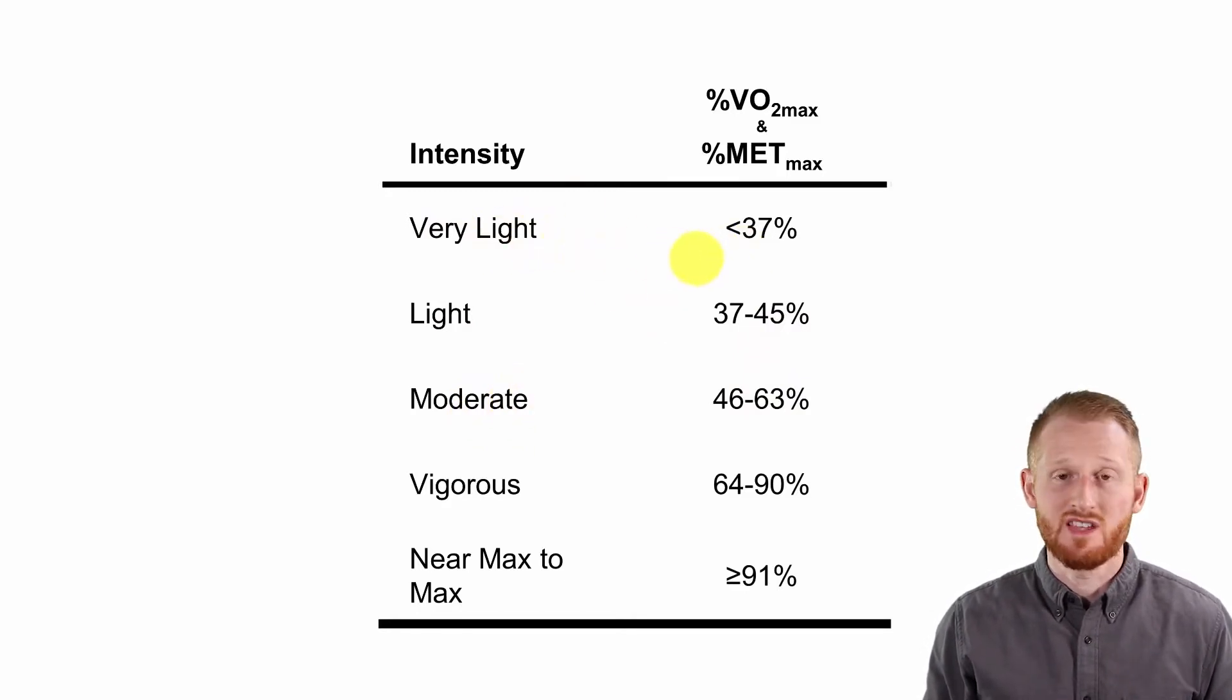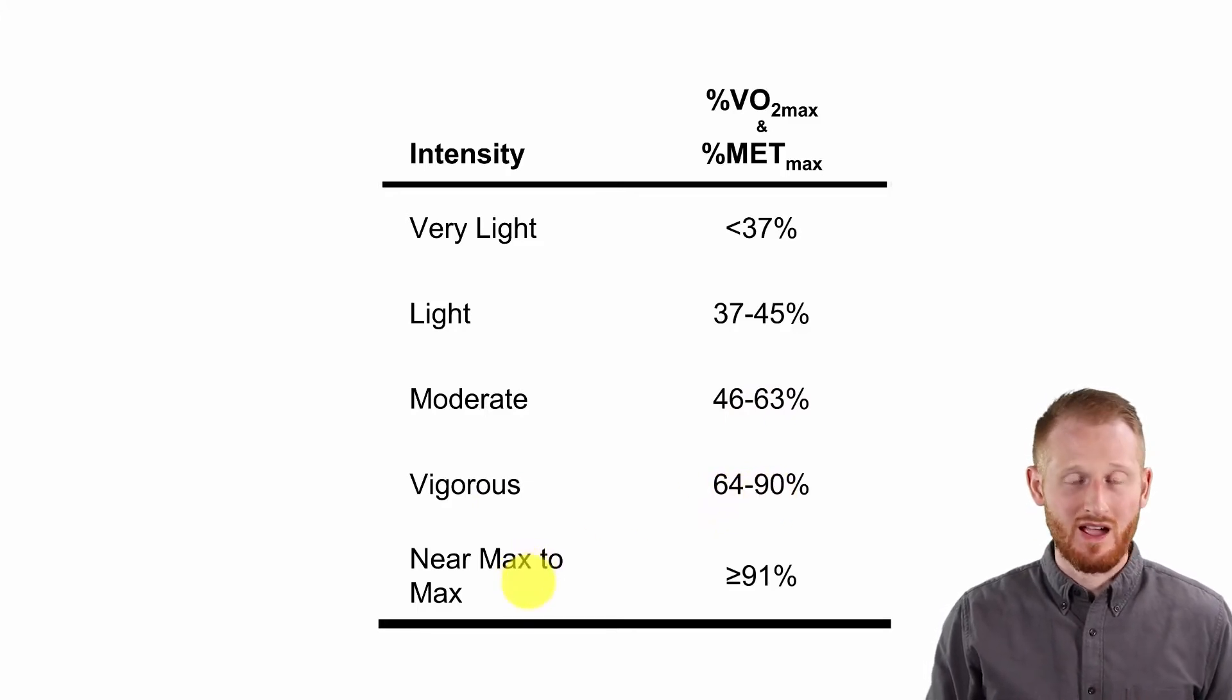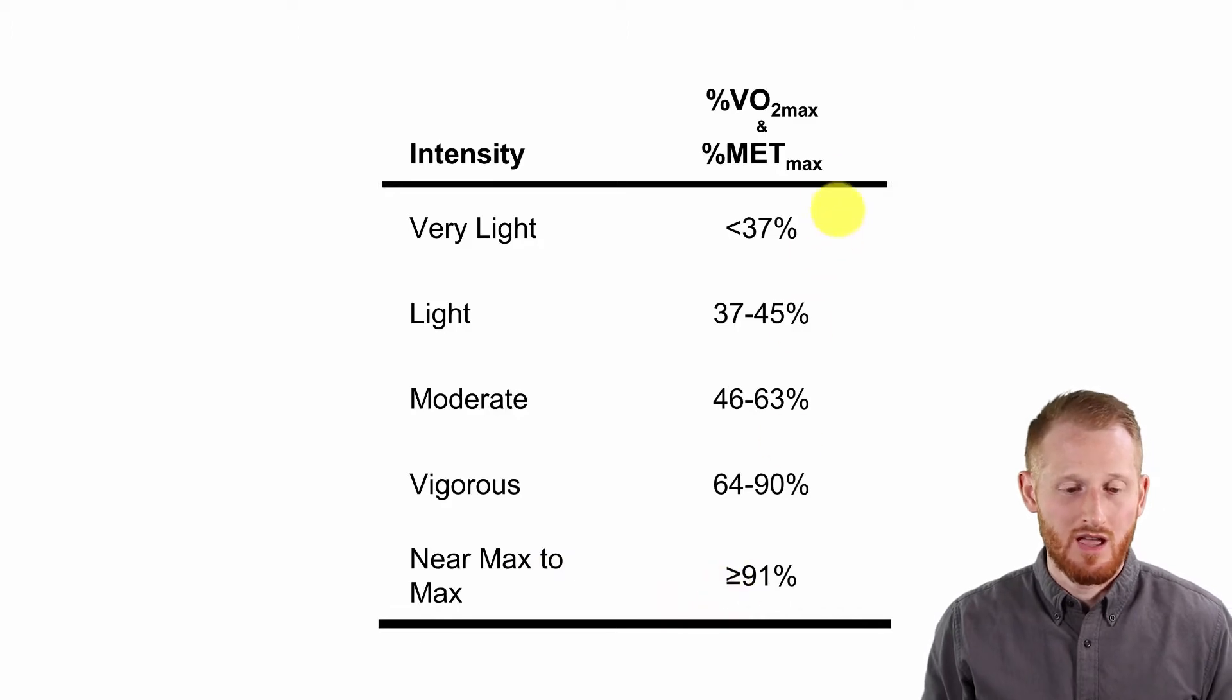Very light is under 37 percent. Light is 37 to 45 percent. Moderate, which is where we're aiming for, is 46 to 63 percent. Vigorous, 64 to 90 percent. And near max or max exercise would be equal to or greater than 91 percent of VO2 max or MET max.